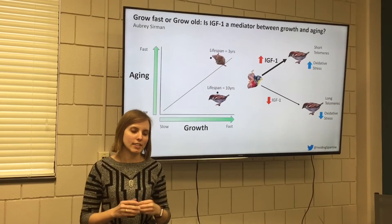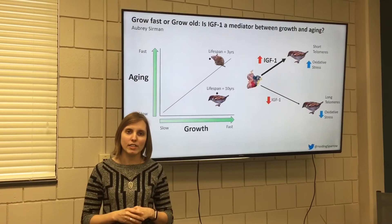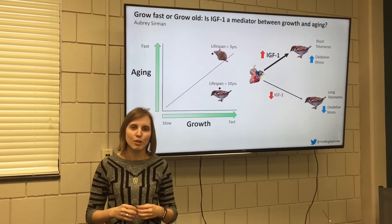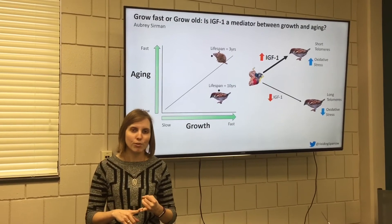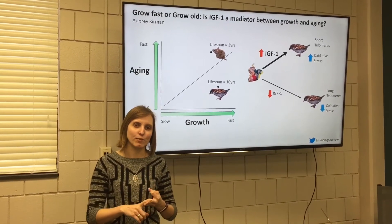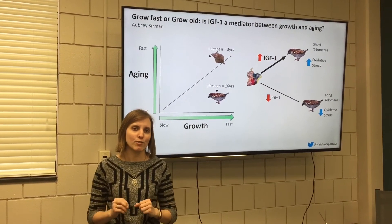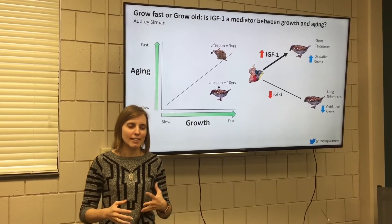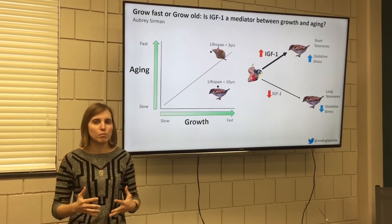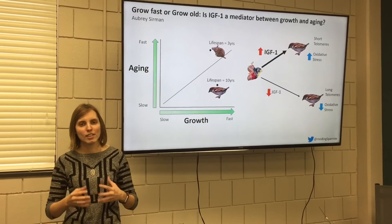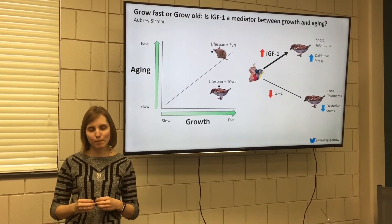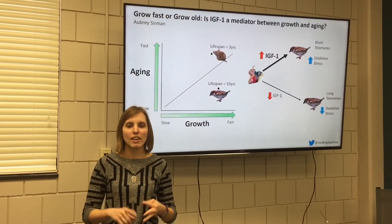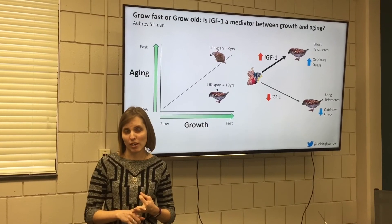To investigate growth and aging trade-offs in house sparrows, I'll be manipulating IGF-1, measuring growth, telomeres, and oxidative stress. And if IGF-1 is an important mediator between growth and aging, then I'd expect those birds with lots of IGF-1 circulating in their blood to have faster growth, shorter telomeres, and increased oxidative stress.